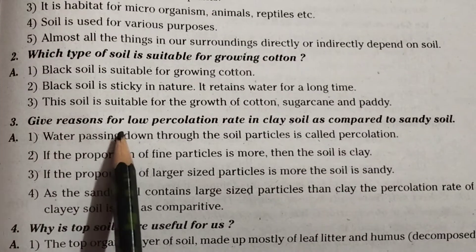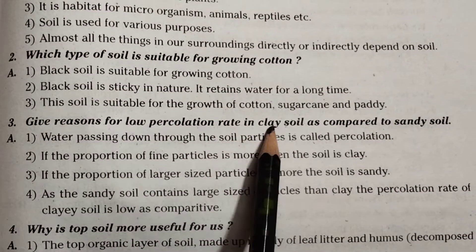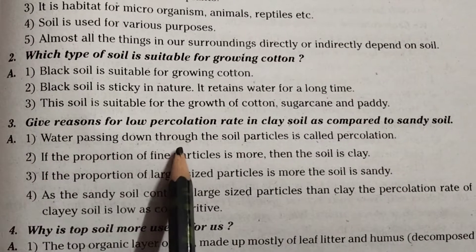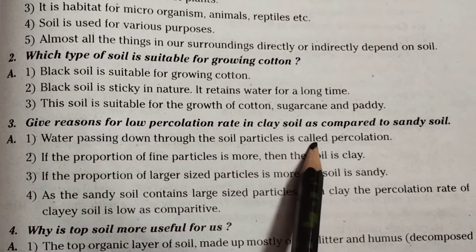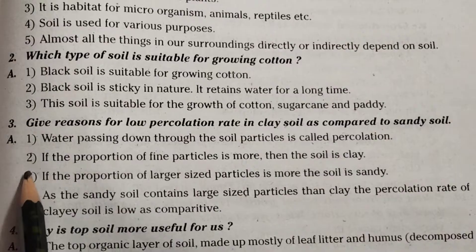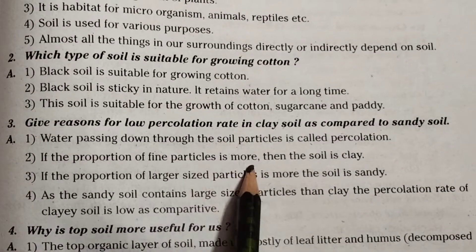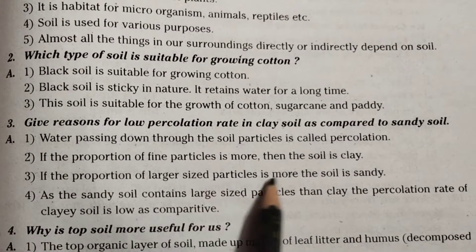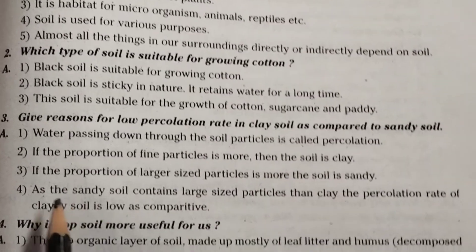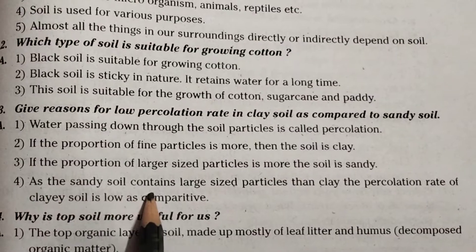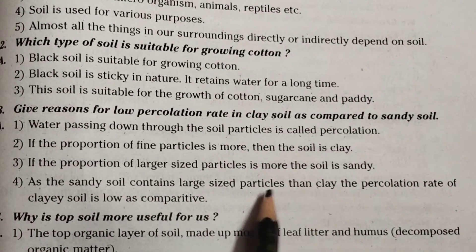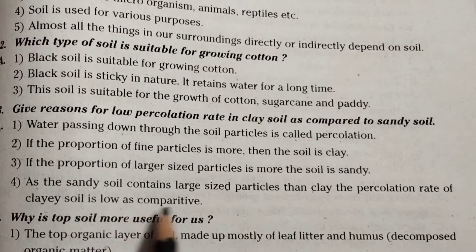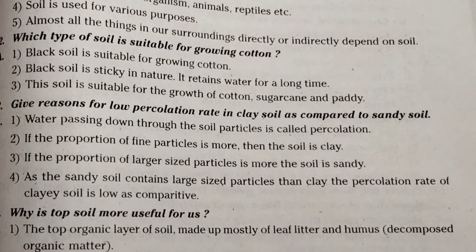Third one: Give reasons for the low percolation rate in clay soil as compared to sandy soil. Answer: Water passing down through the soil particles is called percolation. If the proportion of fine particles is more, the soil is clay. If the proportion of larger size particles is more, the soil is sandy. As sandy soil contains large size particles compared to clay, the percolation rate of clay soil is low.